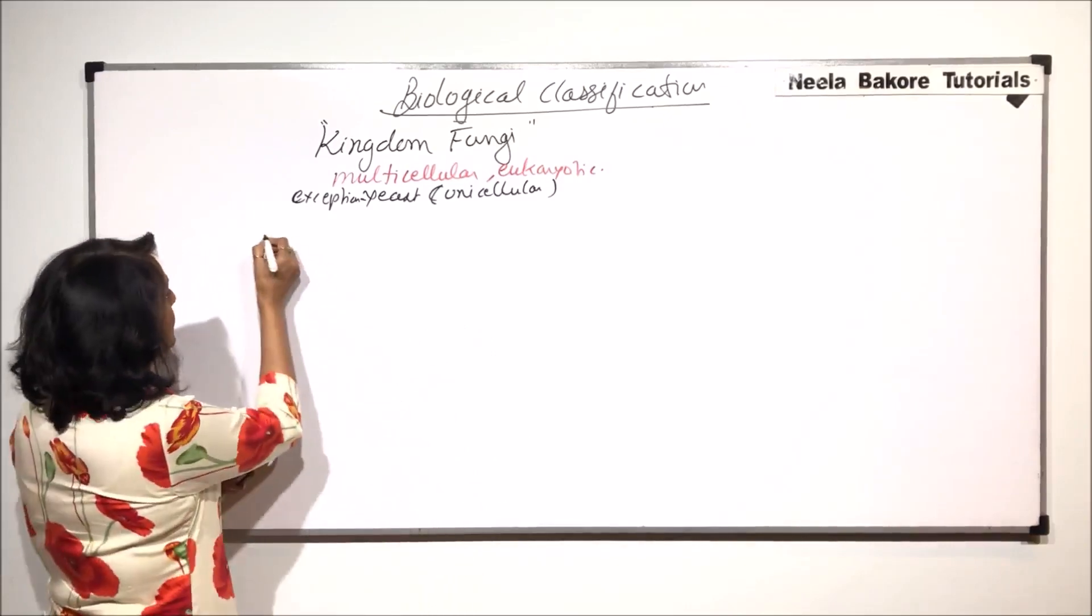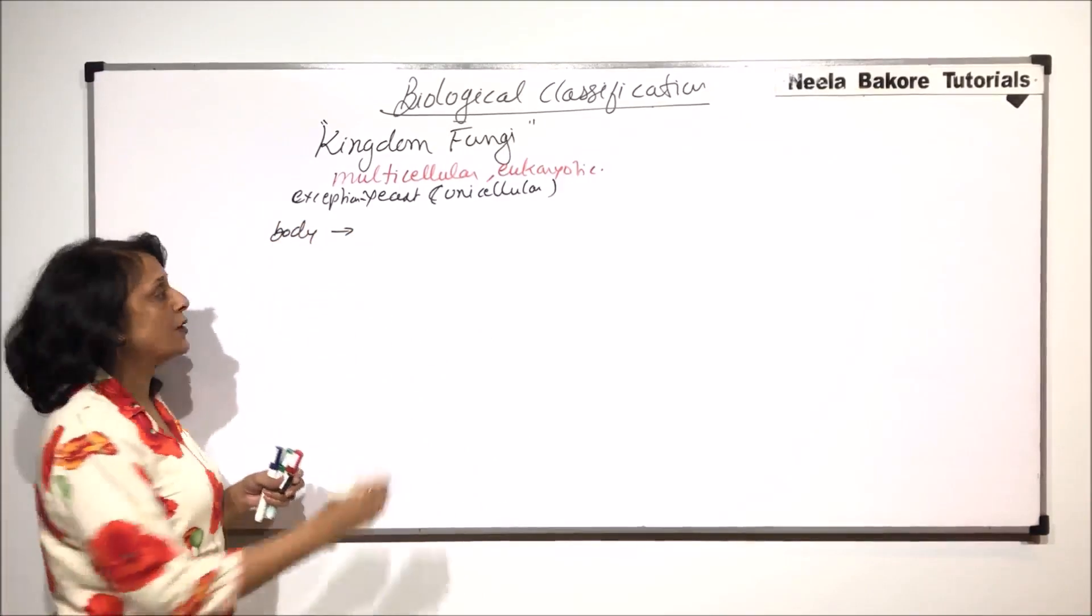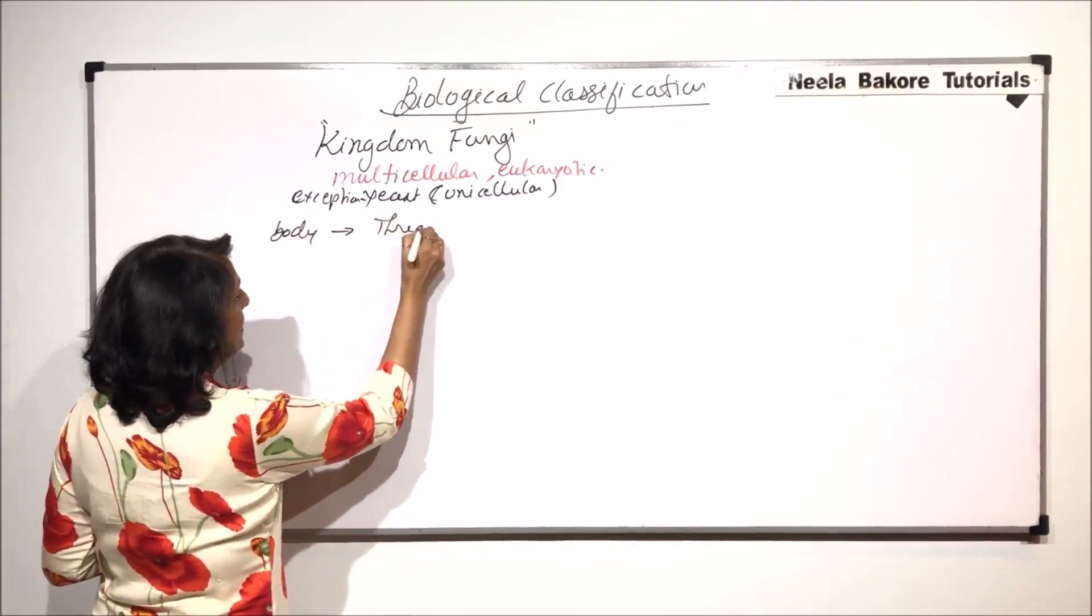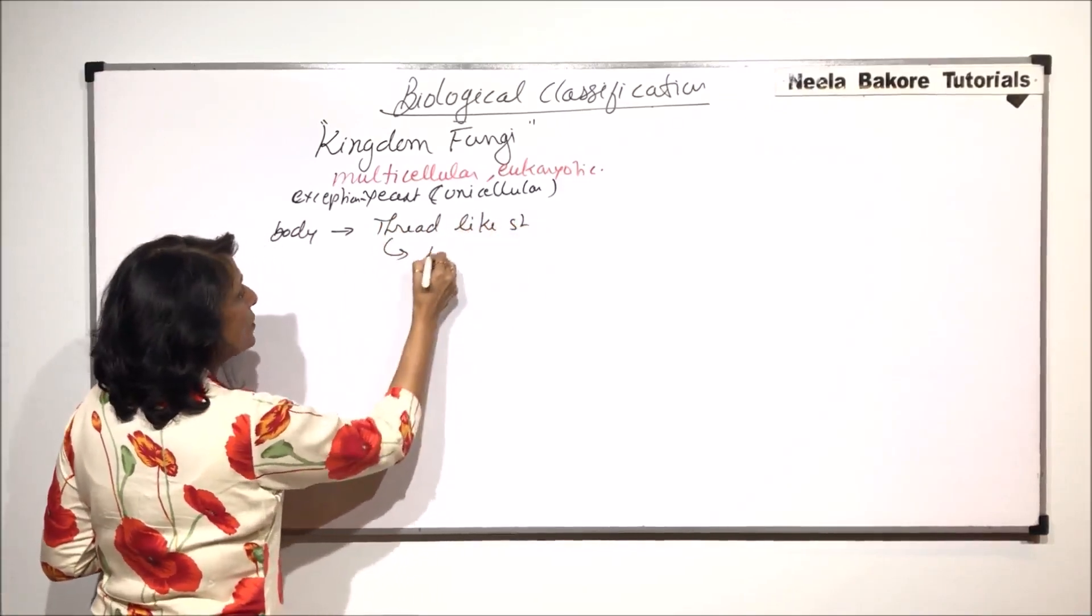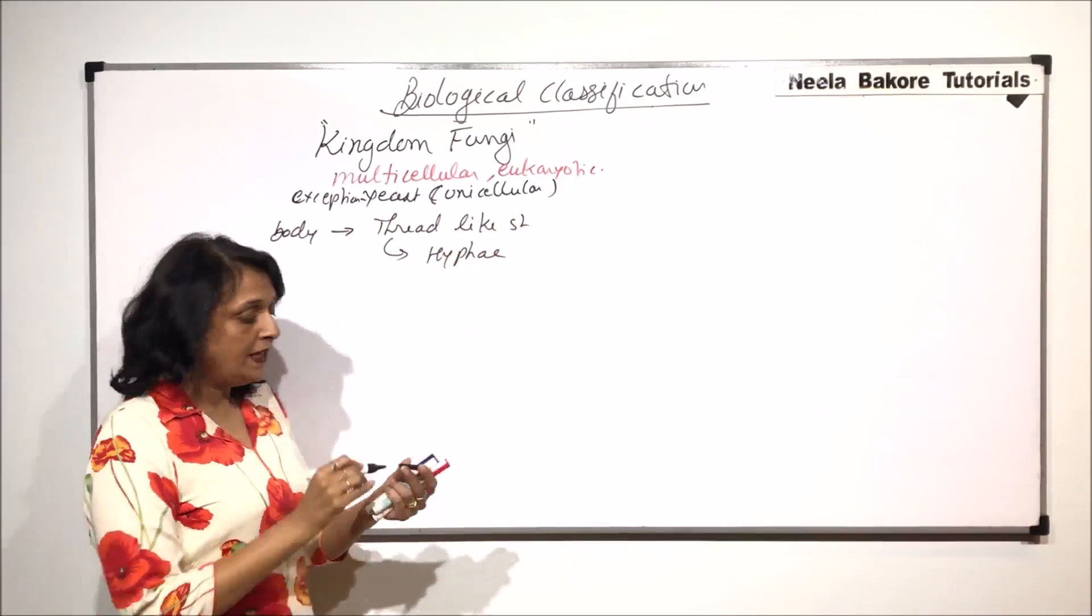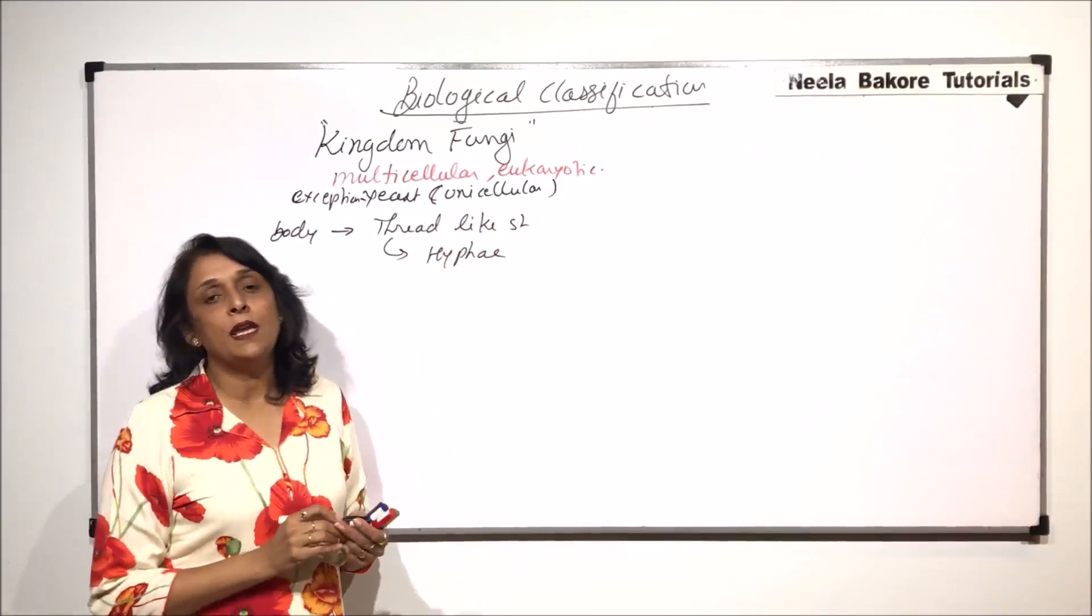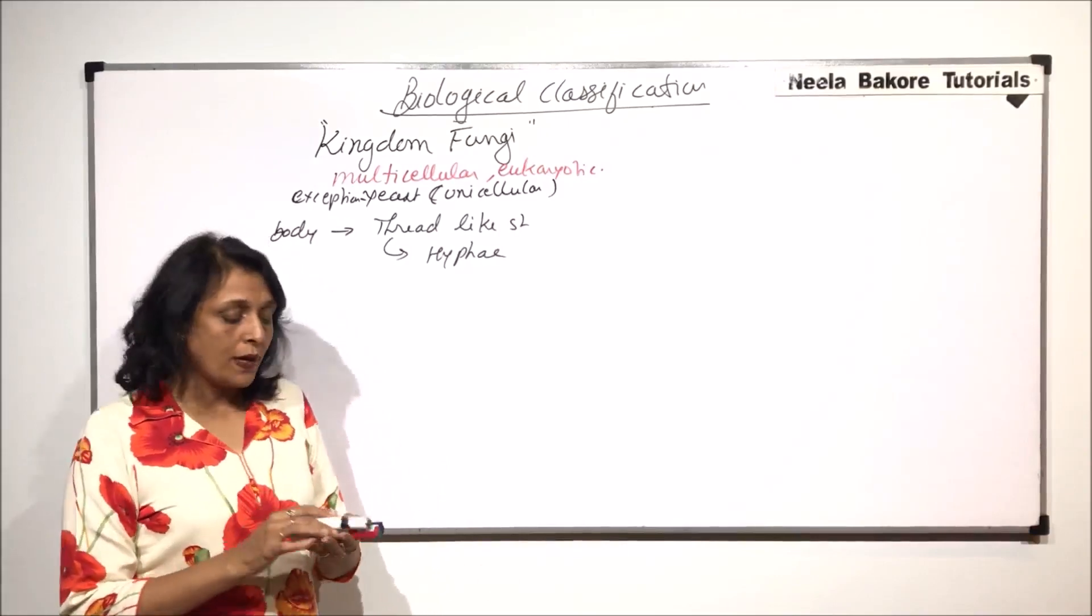All these fungi, their body is made up of thread-like structures. And these thread-like structures are known as hypha or hyphae. These hyphae can be unbranched or branched, and they can be septate or aseptate.